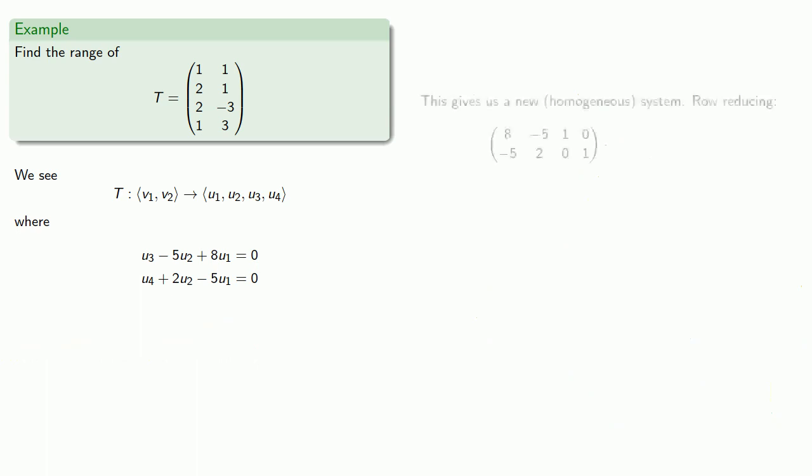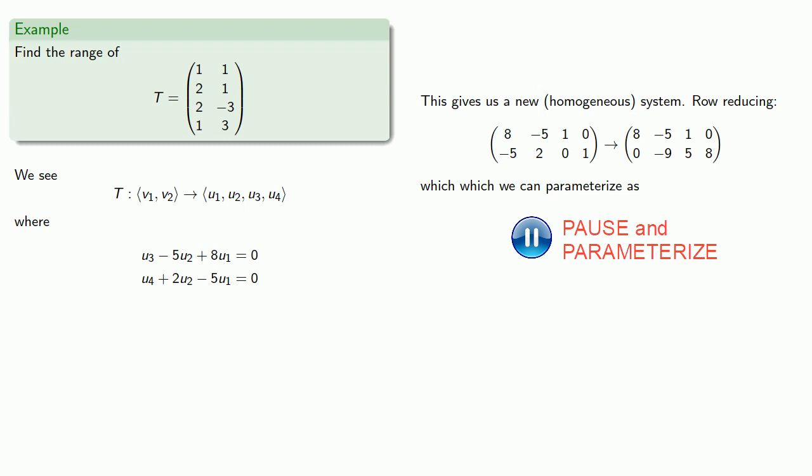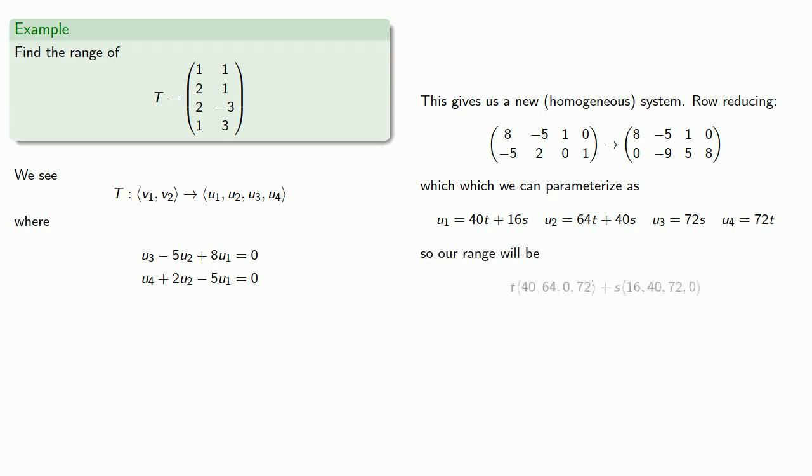And so this gives us a new homogeneous system, which we can row reduce. And we can parameterize our solutions. And so our range will be the linear combinations of the vectors.